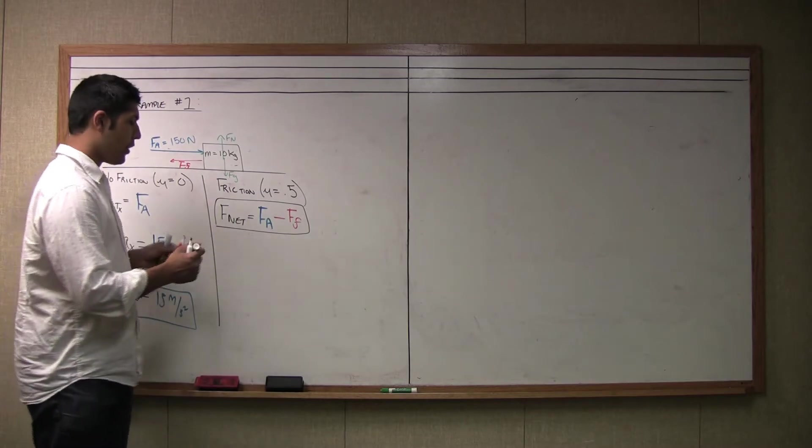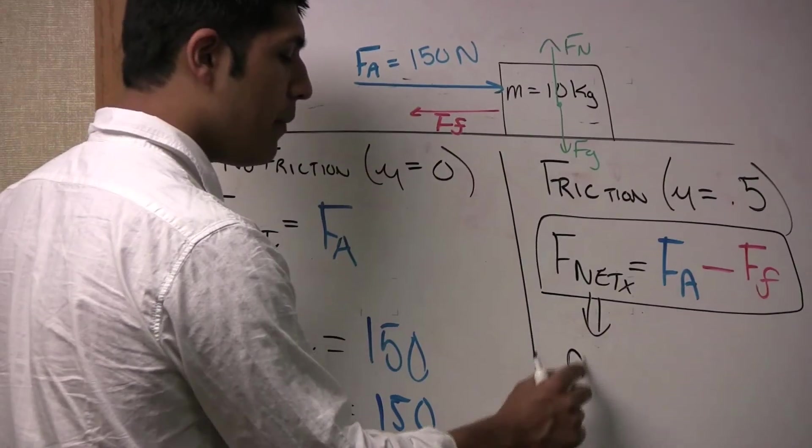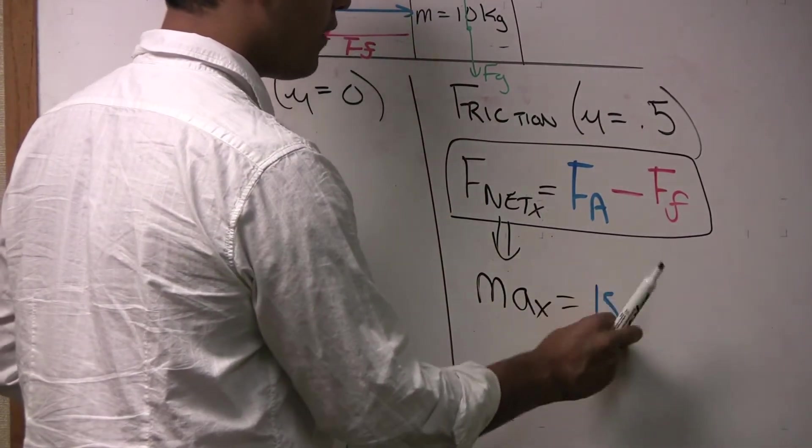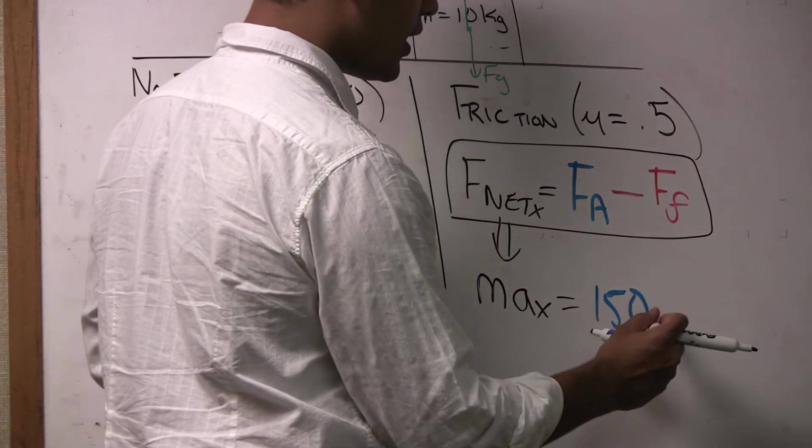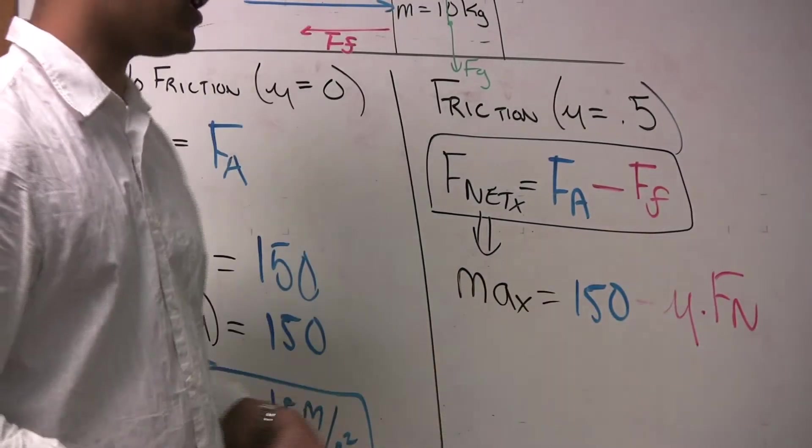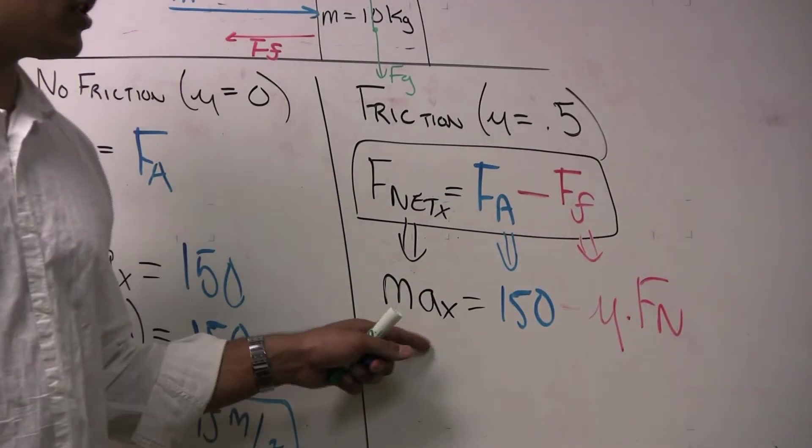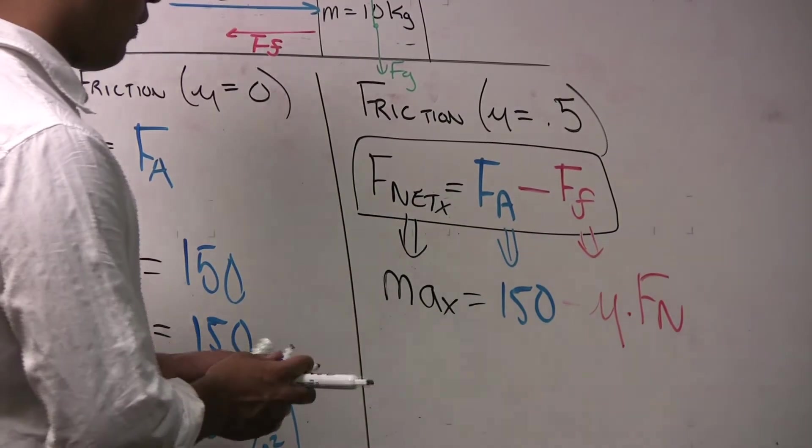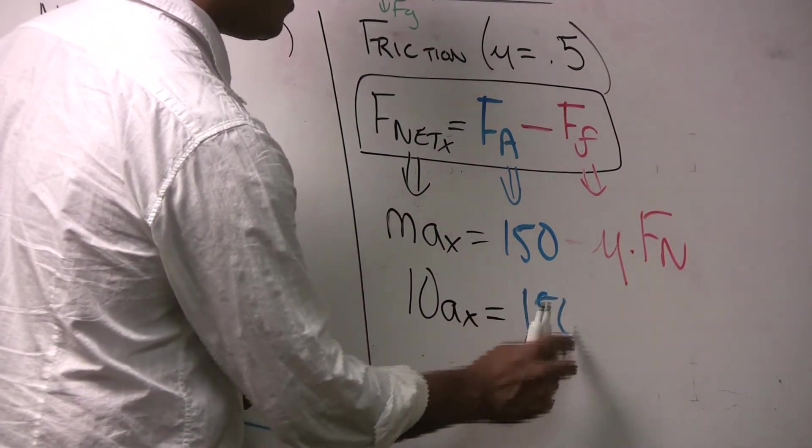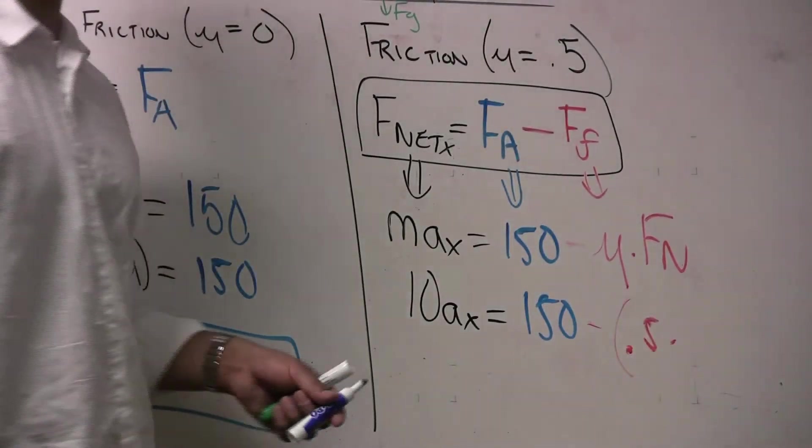We are going to do an expansion step here and F net x is going to expand to M A x. The F applied is going to expand to 150 and the force of friction is going to expand to mu times the normal force, which is the definition or the equation that represents the force of friction. Now that we have taken care of these substitutions, we can start plugging in some values. For my mass, I am going to put 10, so 10 A x is equal to 150 minus mu is 0.5 times the normal force.